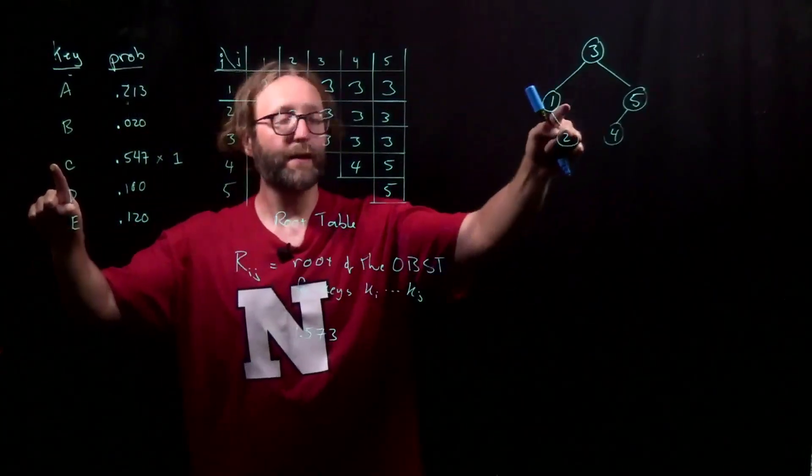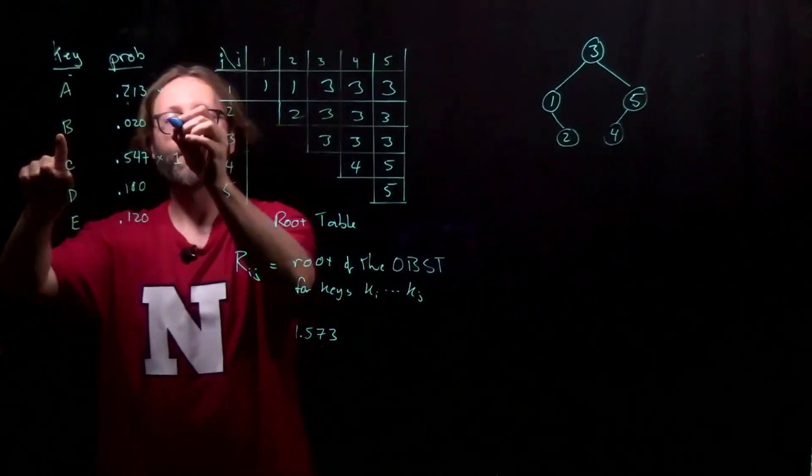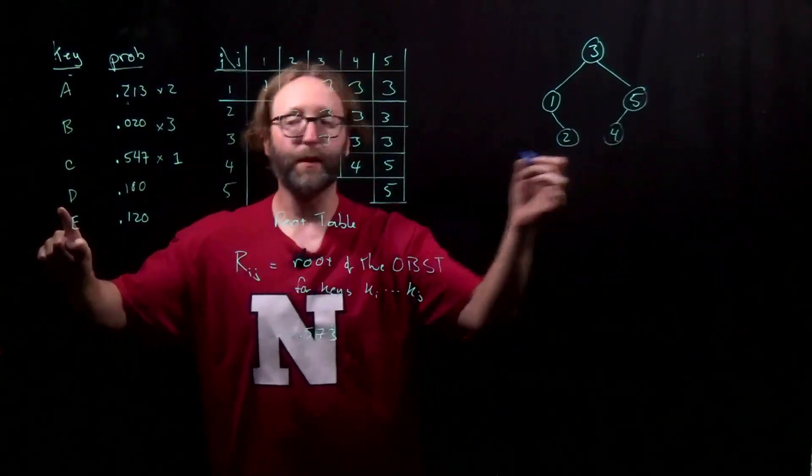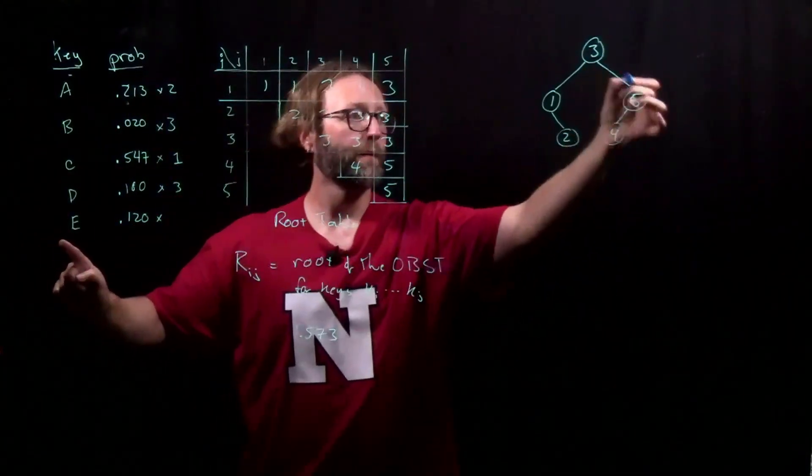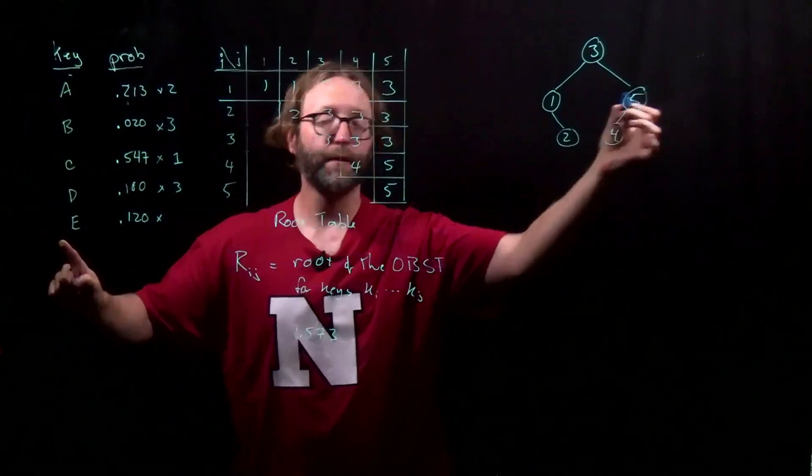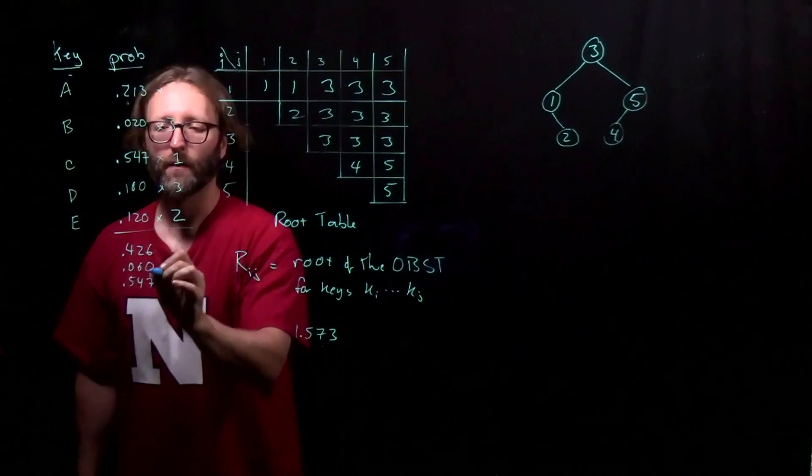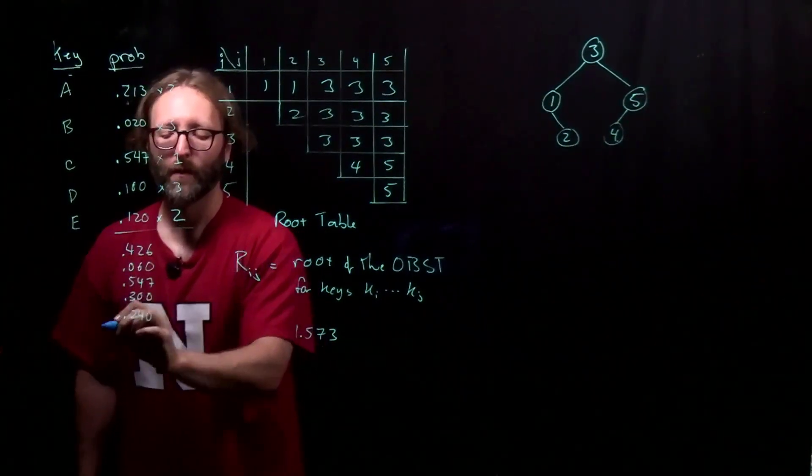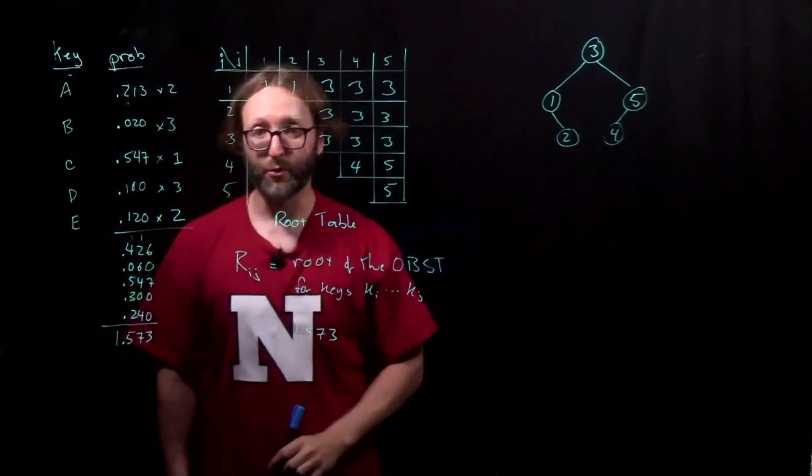For B, there would be 3 comparisons. D would be 3 comparisons. And E, represented here by 5, will have 2 comparisons. And our solution matches.